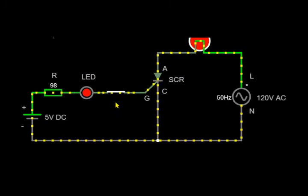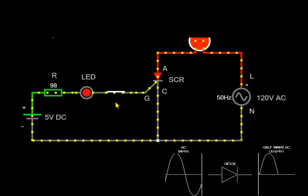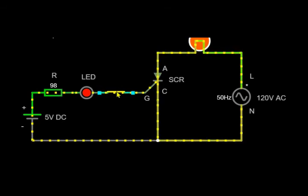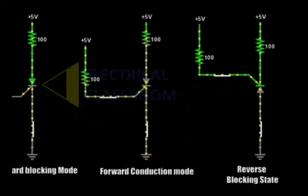When the thyristor is excited to the ON state, it acts like a rectifier diode. To remain in conduction condition, the anode current must be greater than the holding current.